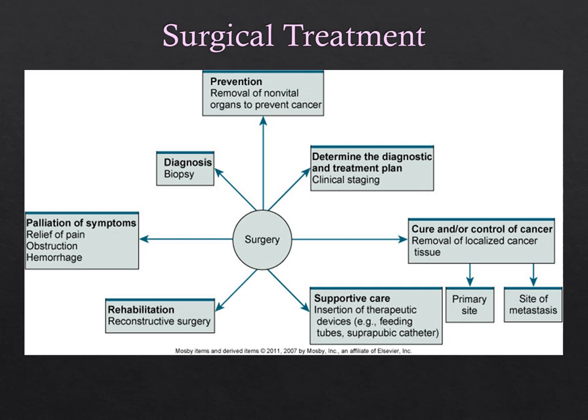Surgical treatment: ideally, removing the entire cancer remains the most frequently used treatment method, though it's not always possible. Surgery is also used for diagnosis through biopsy, or preventatively — for example, women with the gene for breast cancer may remove their breast tissue and lymph nodes preventatively and then use reconstructive surgery. Surgery can also be palliative, such as debulking a tumor that's causing pain or secondary issues.